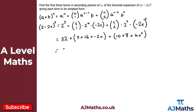Simplifying: 32 stays as is. 5 times 16 is 80, times −2x gives −160x. Then 10 times 8 times 4 gives 320x squared. So the first three terms in ascending powers of x are 32 − 160x + 320x². We can't simplify any further, and that's our solution.